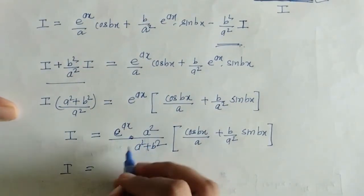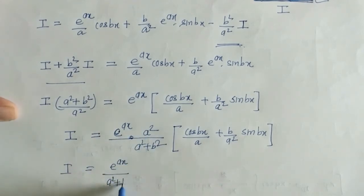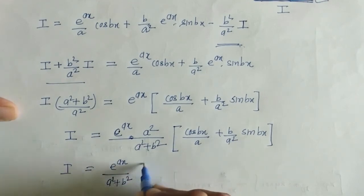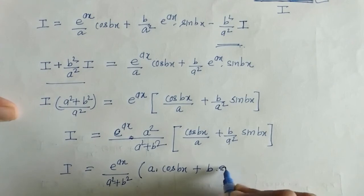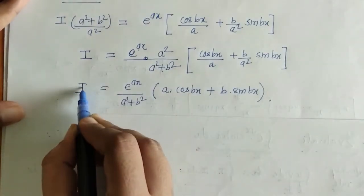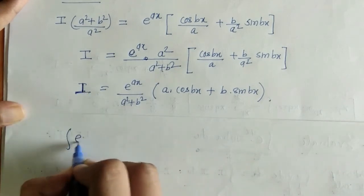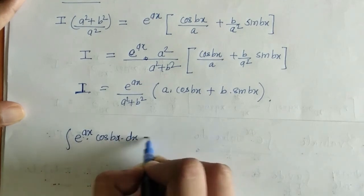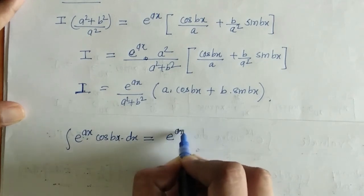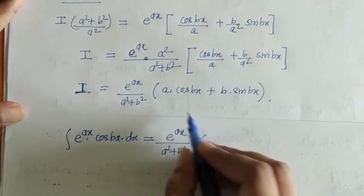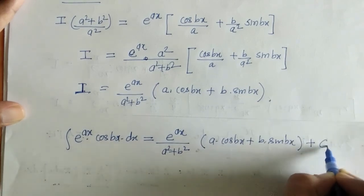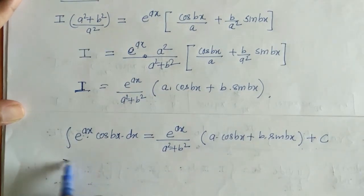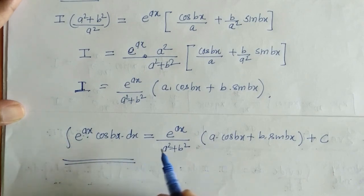On final simplification, we get I equals e^(ax) upon (a² + b²), in brackets: a·cos(bx) plus b·sin(bx). So the value of this integral is e^(ax)/(a² + b²) times (a·cos(bx) + b·sin(bx)), plus the integration constant C. In this way we have found the value of this integral, where a and b are constants.